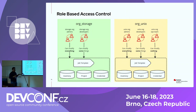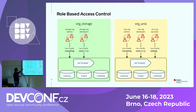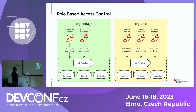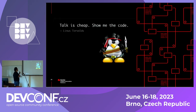For this demo, I've used two organizations — org storage and org unix — with role-based access controls defined. Storage admins have admin access to all objects. For the unix organization, admins have full access, developers have execute permissions, and the operations team can only use existing templates — they cannot modify or edit any job template or project. That's my favorite line from Linus Torvalds. Let's talk about the code and how it works.